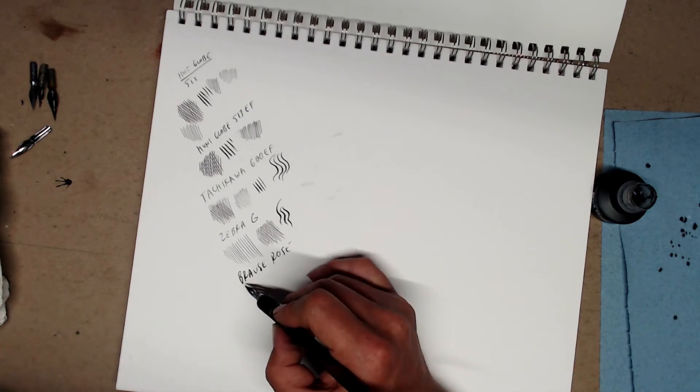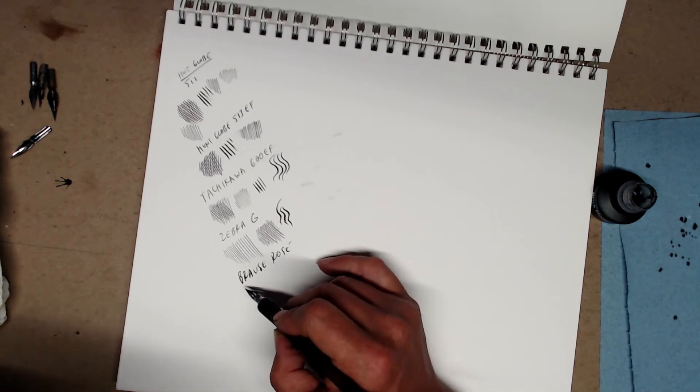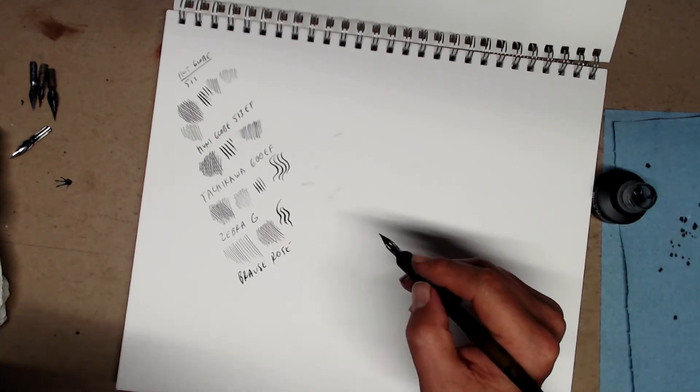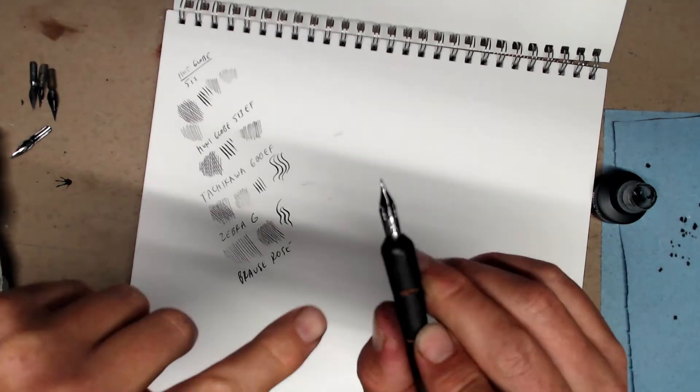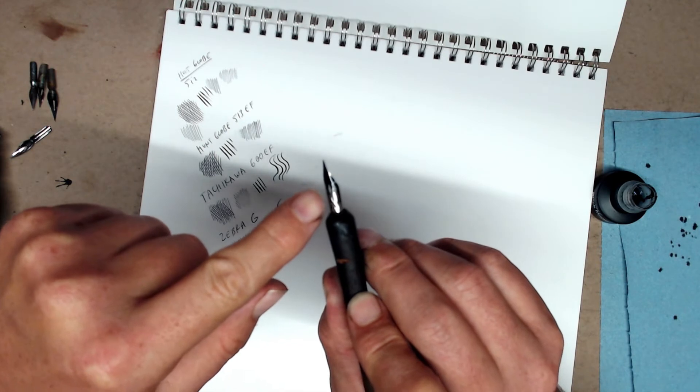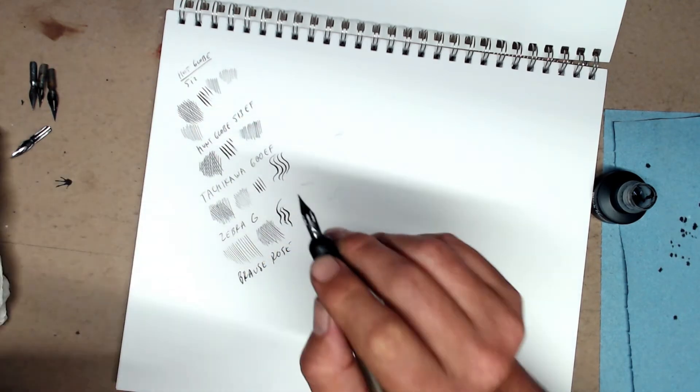So this is the Browse Rose. So first of all, we're no longer dealing with a fine line. This is not even a medium. This is like a broad. The main advantage of this pen is that it is a calligraphy nib. It's very sensitive. If you look at it, it has these little cutouts. So basically, there's one little part that flexes, which makes this pen really, really flexible.